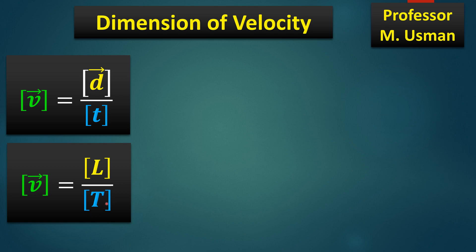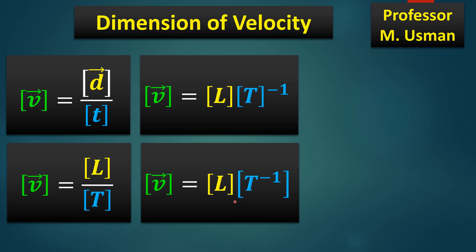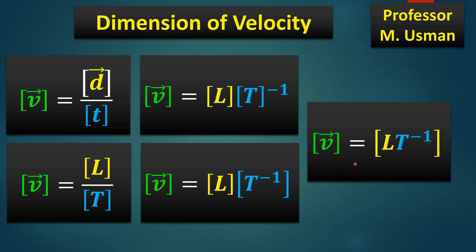Now this T which is in the denominator, when it comes to the numerator the sign of its power is reversed, so the power of the square bracket T becomes minus one. In the next step we write it as dimension of velocity V is L T inverse, and our final answer becomes: the dimension of velocity V is equal to [LT⁻¹].